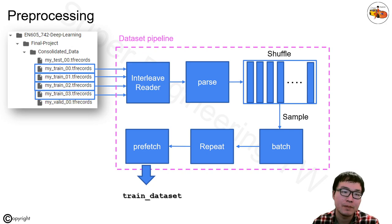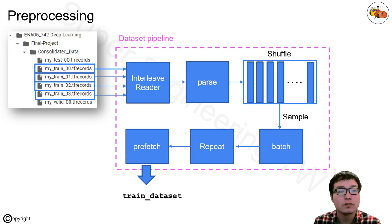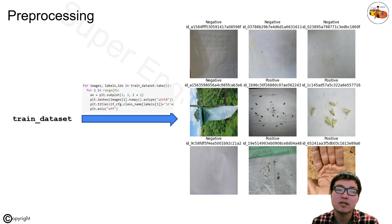This is a visualization of what you get when you read this dataset. If you plot the first nine images from the first batch, you'll see that some images are negative and, for a positive image, it contains the defined pests inside.